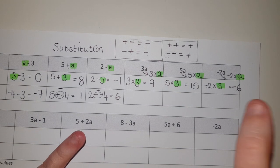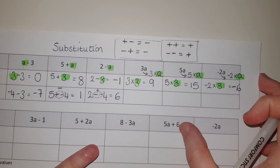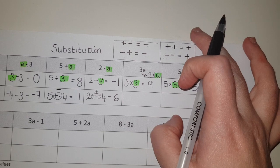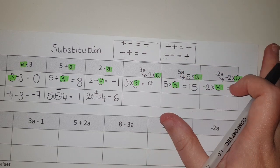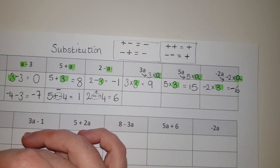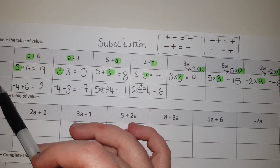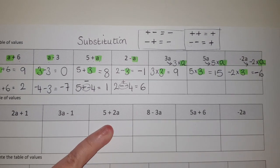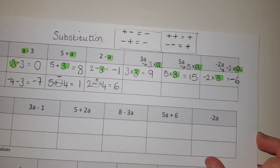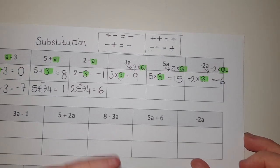Hopefully not too many issues on those ones. Remember, if you're really stuck on the negative number ones, don't worry about the row where the question number at the start is negative — just do all the other ones first, and we'll come back if we've got time at the end.